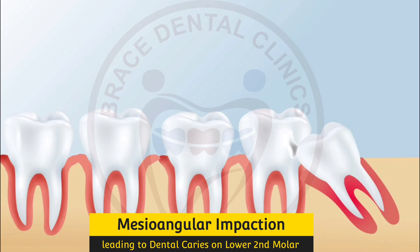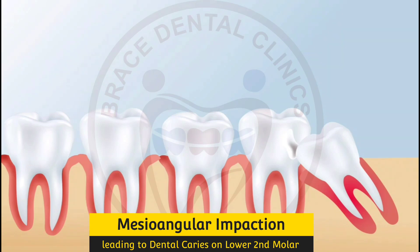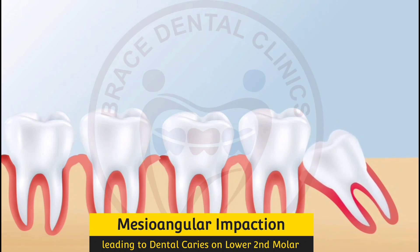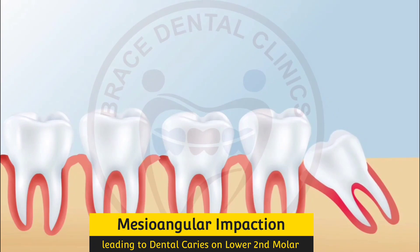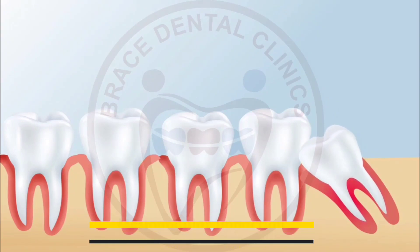As a result, the third molar can put pressure on the distal side of the second molar, leading to various complications. One of the most common complications is the development of dental caries, or cavities, on the distal side of the second molar. Read the description below for more information on this.